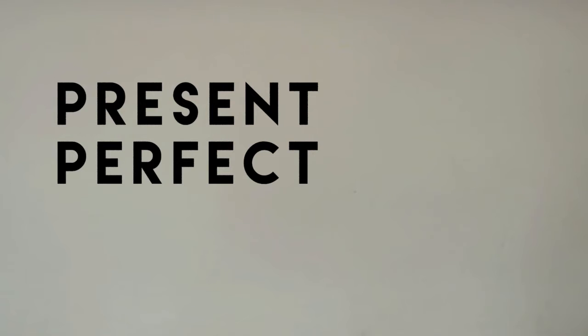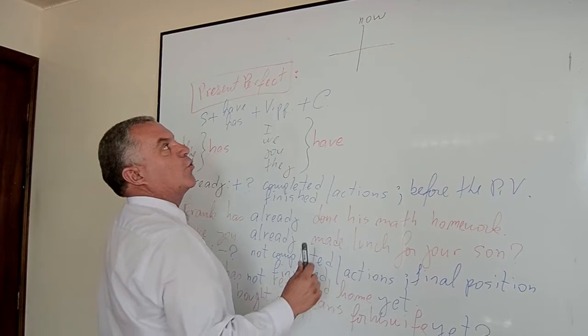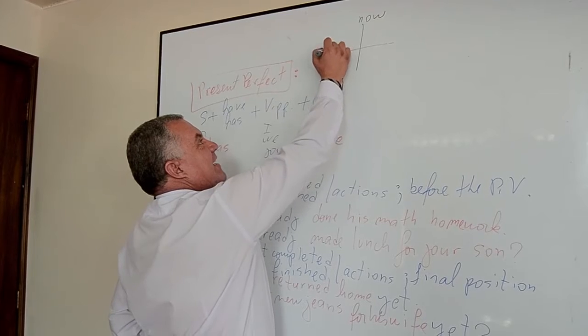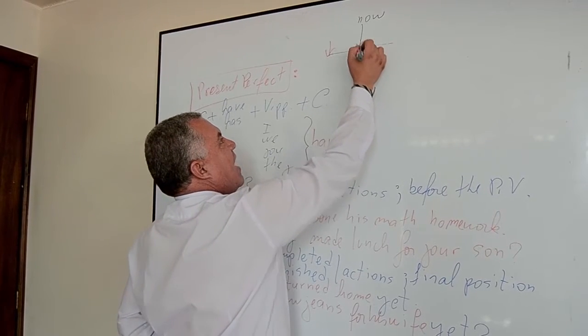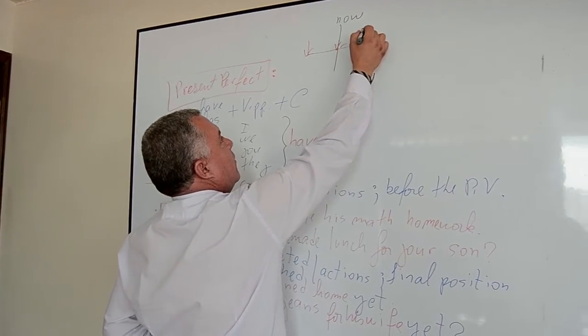Ok, now, the Present Perfect is used to indicate that the action began in the past, it continues until now and possibly will continue in the future.